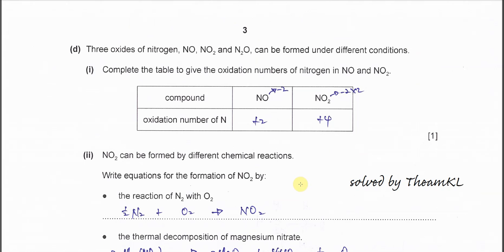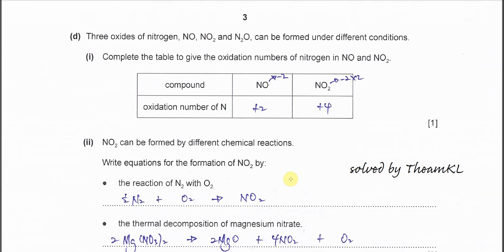Part D(i): Three oxides of nitrogen: NO, NO2 and N2O4. Complete the table to give the oxidation number for NO and NO2. This one is very easy. Oxygen is -2, nitrogen must be +2. Oxygen is -2 times 2 equals -4. This molecule is neutral, nitrogen must be +4.